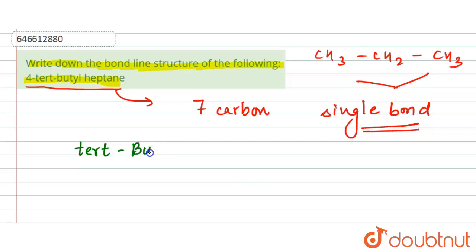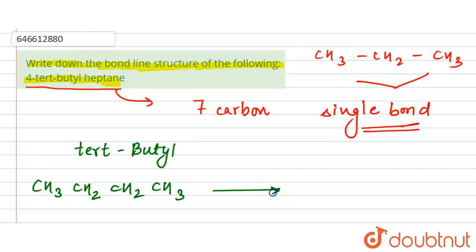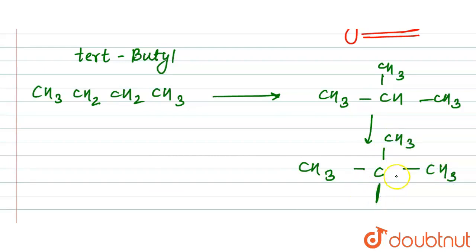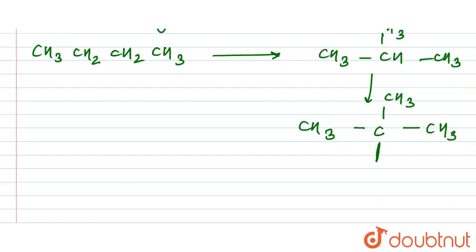We need to understand what tertiary butyl is. We start with butane: CH₃CH₂CH₂CH₃. From butane we get isobutane. From isobutane, we form tertiary butyl — a carbon with three methyl groups (CH₃) attached to it. That central carbon with three CH₃ groups represents our tertiary butyl group.